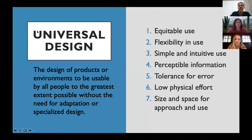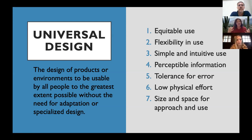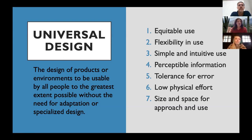The seven tenets of universal design: First, equitable use — how can we ensure everyone has the same experience of the space and program? Nobody should be disadvantaged when it comes to safety, convenience, time, or money. Second, flexibility in use — are there multiple ways people can engage with the space, the content, the communication, the information? For example, providing materials electronically, in print, and via an app, letting people choose how they engage.